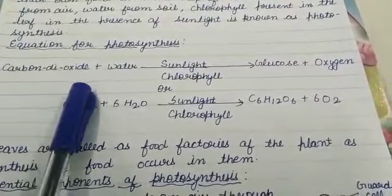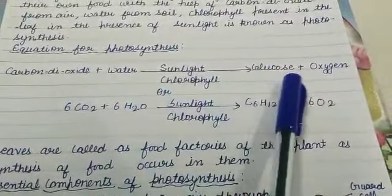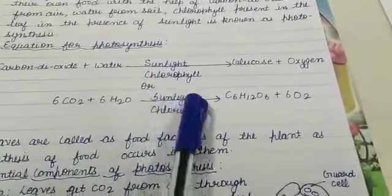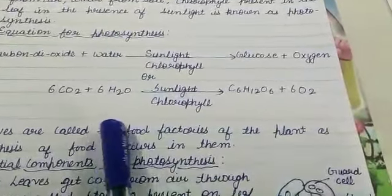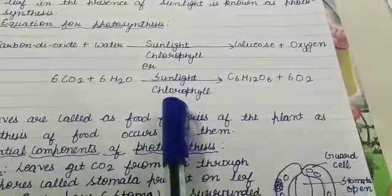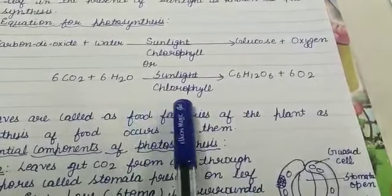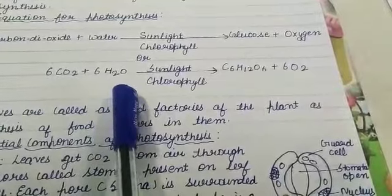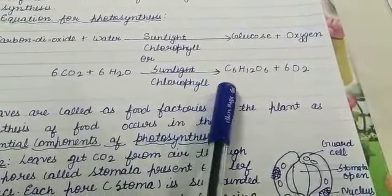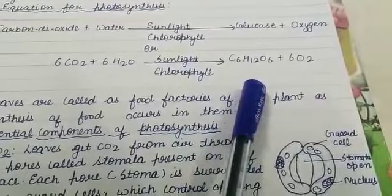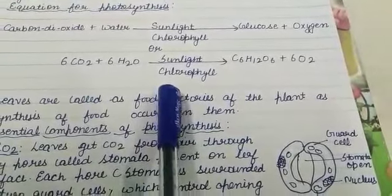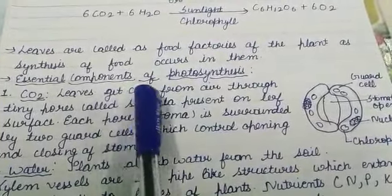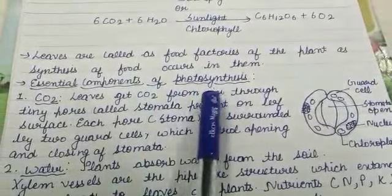The equation for photosynthesis: carbon dioxide plus water gives glucose and oxygen, in the presence of sunlight and chlorophyll. Written chemically with balanced formulas: 6CO₂ + 6H₂O → C₆H₁₂O₆ + 6O₂. This is the complete balanced chemical equation for photosynthesis.